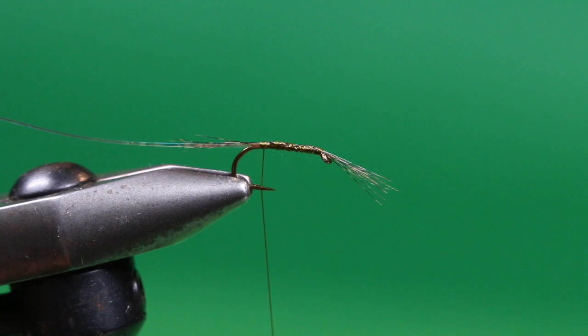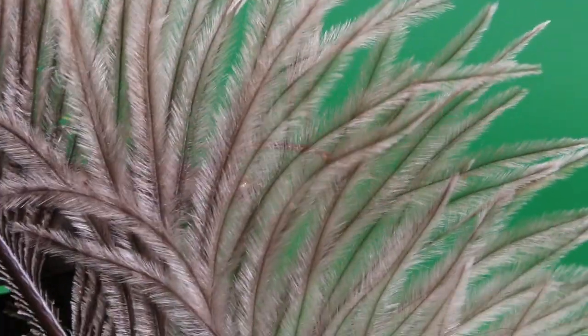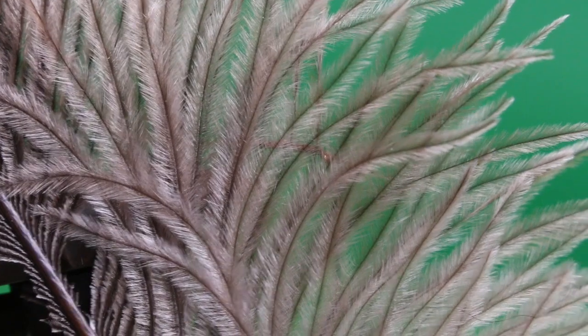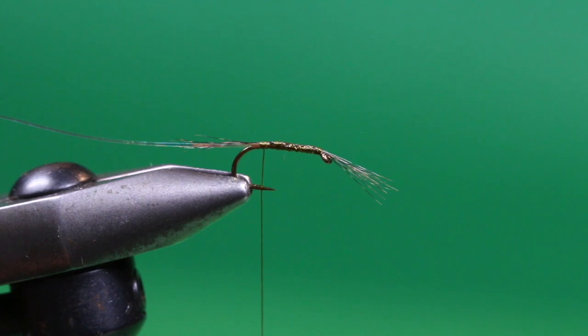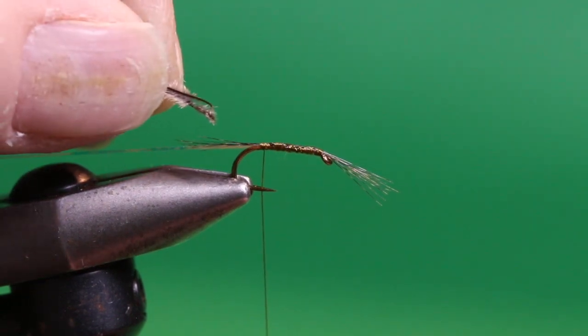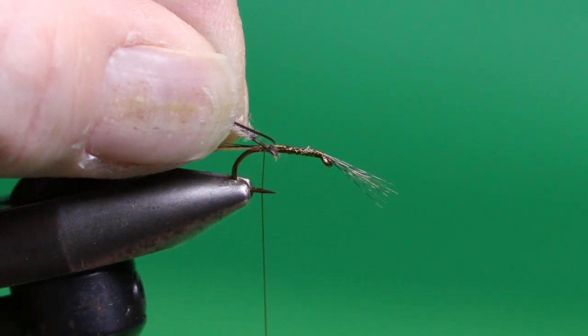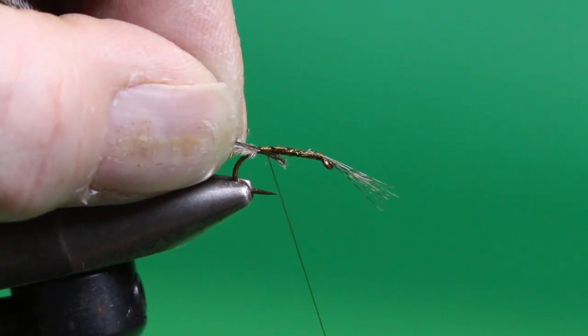And then for the body, we're going to use some natural gray ostrich hurl, one of my favorite tying materials for stillwater flies and probably very underrated. You could certainly tie this fly in other colors besides natural gray. Olive or tan would be good combinations, or a blend of one strand of olive and one strand of tan to sort of give you that Calibatus color. I'm going to take two strands, pull them together. I've used my thumbnail to rake off the fibers from the base here, just to give a nice firm tie-in and not to create any more bulk than we have to.